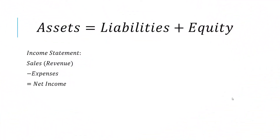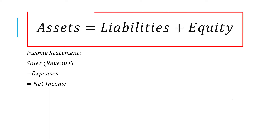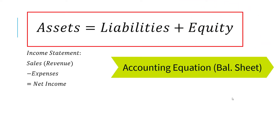Before we jump into the DuPont analysis, I want to review some of the elements of the financial statements, since the formulas we're going to be looking at will reference some of those elements. The first thing is called the accounting equation, sometimes just called the balance sheet equation: assets equal liabilities plus equity. This is always true for every corporation. Assets are all the things the corporation owns.